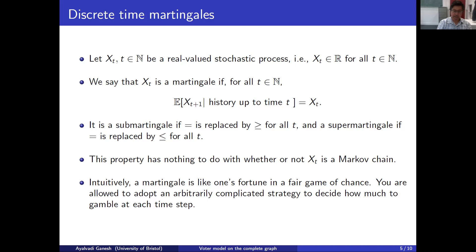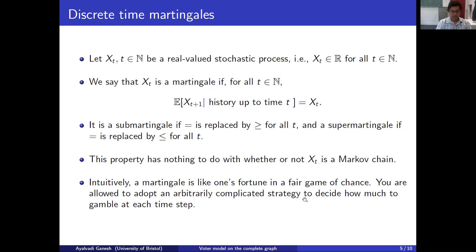It doesn't depend on how much you bet — you might bet all your money, a tiny fraction of it, or a fraction that depends on the history. You might say: if I won the last three games, I'm going to bet a bigger fraction. But the point is that if the games are independent and fair, your fortune will satisfy this martingale property. The conditional expectation cannot change — you can't come up with a strategy that always makes money for you, not even in expectation.